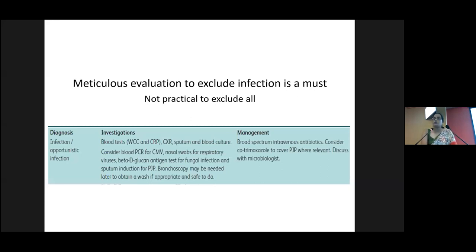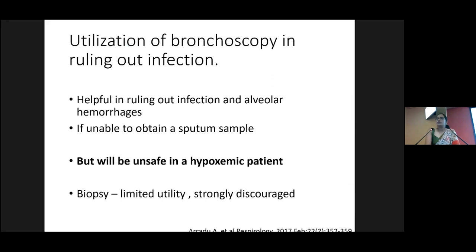As for investigations, this includes blood tests, CRP, procalcitonin, and sputum studies — which must include usual bacterial pathogens but also fungal infections, atypical infections including PJP, CMV, and other common viruses, as they can be triggering factors. Bronchoscopy is helpful in ruling out infections and alveolar hemorrhages in acute presentations, mainly in patients from whom we cannot obtain a proper sputum sample. It is still tricky to perform bronchoscopy in unsafe patients who are already hypoxemic, so we must carefully identify patients who truly need these procedures.